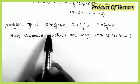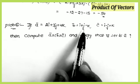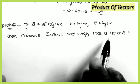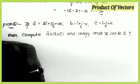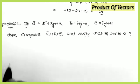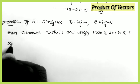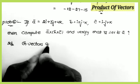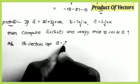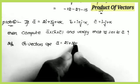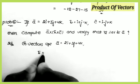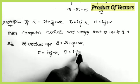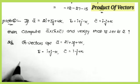Next problem: if a̅ = 2i + 3j + 4k, b̅ = i + j − k, and c̅ = i − j + k, then compute a×(b×c) and verify that it is perpendicular to a̅. This is a very very important question. Let us start the solution — first writing the given vectors.